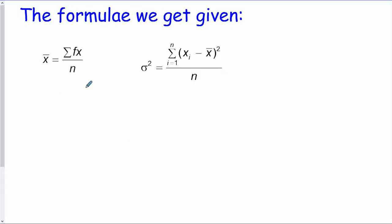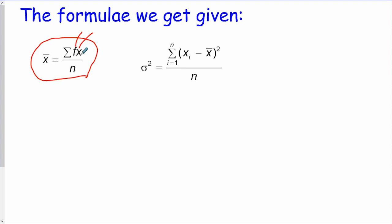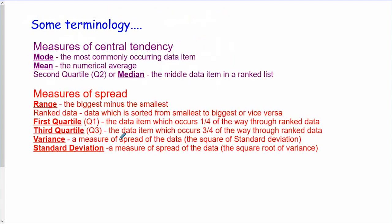We'll start by looking at two formulas. This one here is for the average, or the mean — it says just add the values up and divide by how many there are. The f is the frequency, the number of times a data item occurs, multiplied by the actual data item. This formula here gives us our variance, which is the square of the standard deviation — we'll talk about that in more detail shortly.